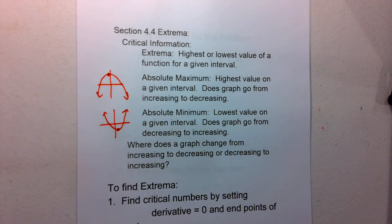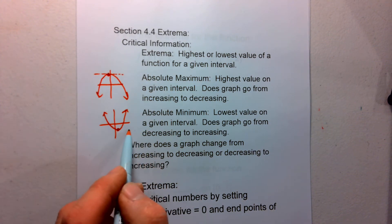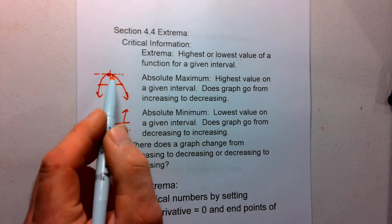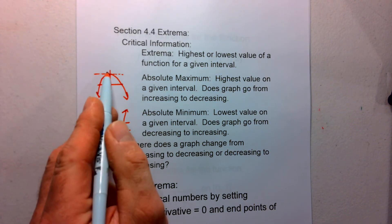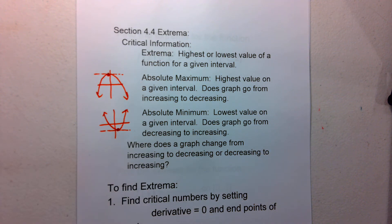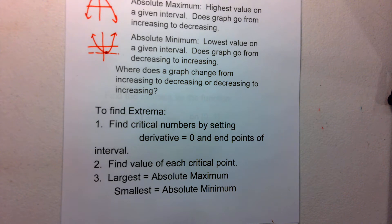Where does the graph change from increasing to decreasing, or decreasing to increasing? Thinking back about our derivatives and curve sketching, it's happening when we have a horizontal tangent line. A horizontal tangent line occurs when the derivative is equal to zero. So this all plays back into our calculus and derivatives. To find our extrema, we're going to find those critical points — we find when the derivative is equal to zero.